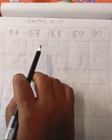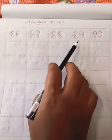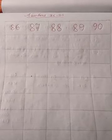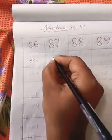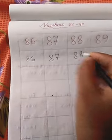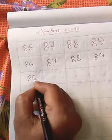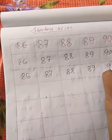We can read again. 8, 6, 86. 8, 7, 87. 8, 8, 88. 89, and last 9, 0, 90. Now, we have to read the numbers. 86, 86, 87, 88, 88, 89, 89, and last 9, 0, 90.